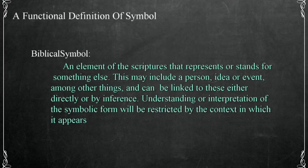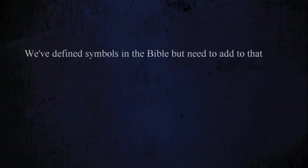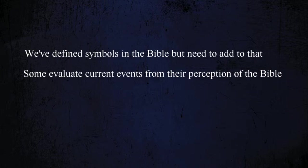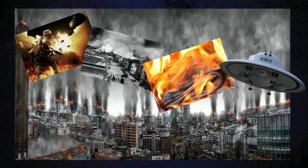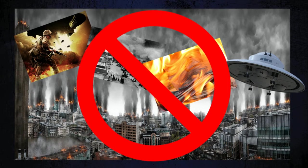Now that we have a working definition of what symbols in the Bible are, we need more information to identify and understand them. Some individuals attempt to evaluate current world events in light of their interpretation of the scriptures. Some insist that the Bible, like the writings of Nostradamus, can be used to tell what's going to take place in the world around us — predictions of war, disasters, government conspiracies, UFOs, and other events heralded as being spoken of in the scriptures. The problem is that most of these explanations are either too exaggerated to be taken seriously or are predictions of things that never happen.